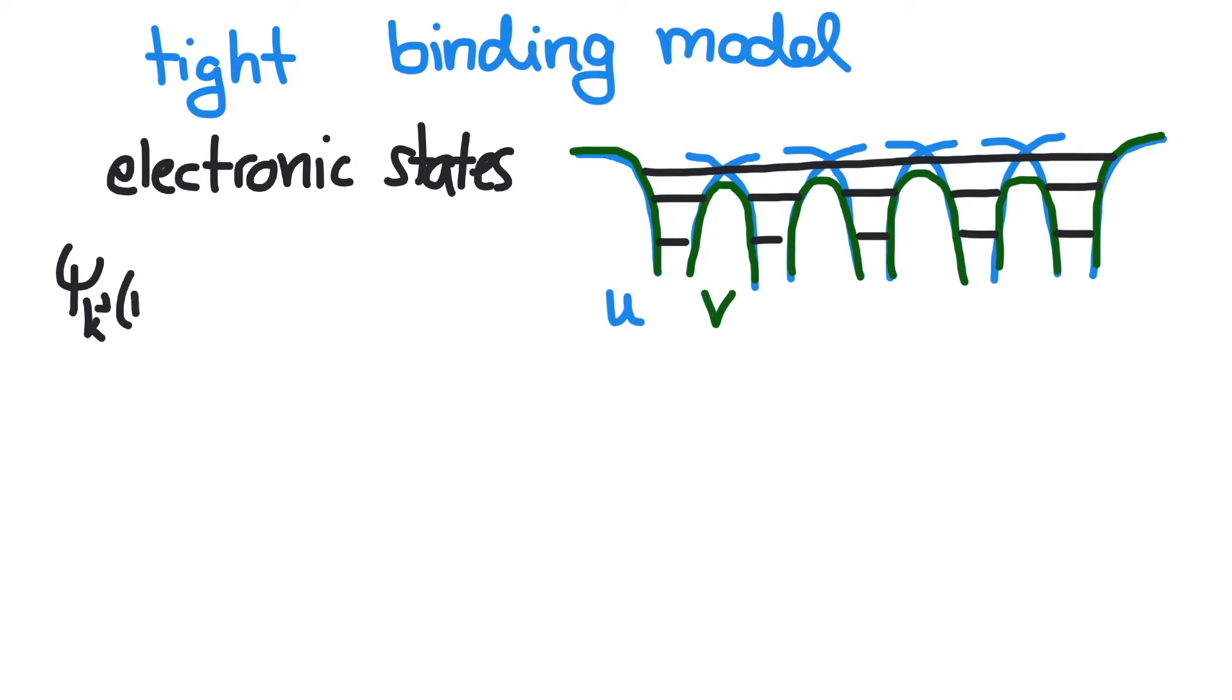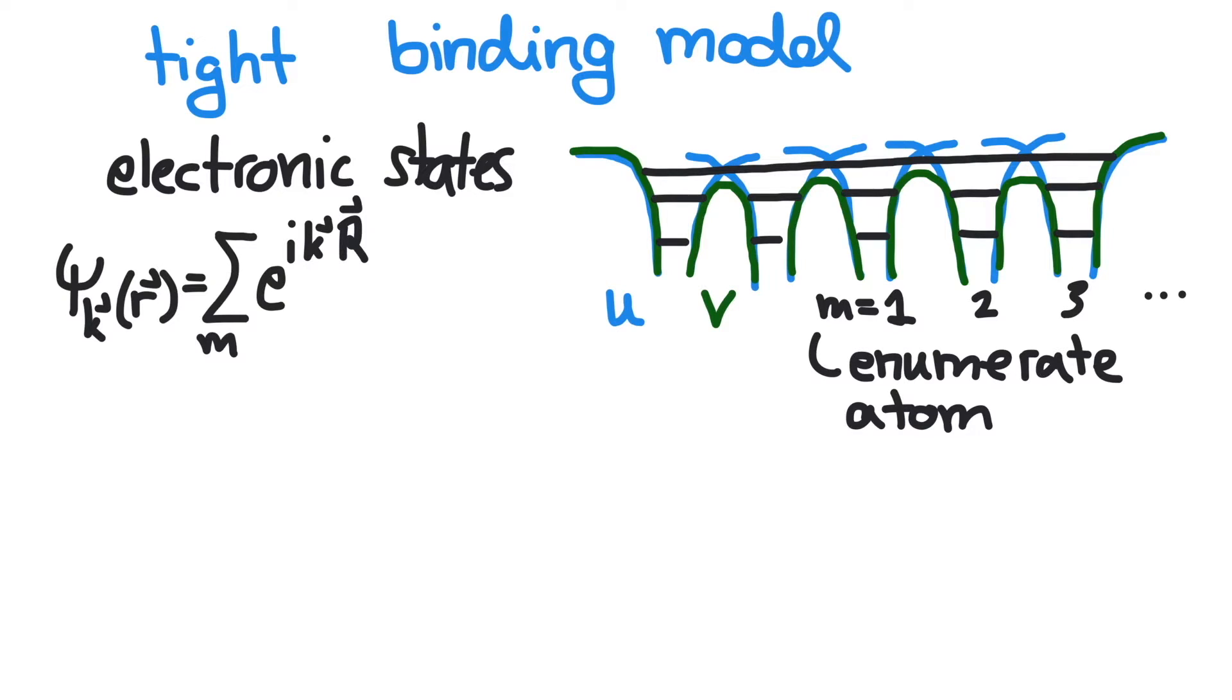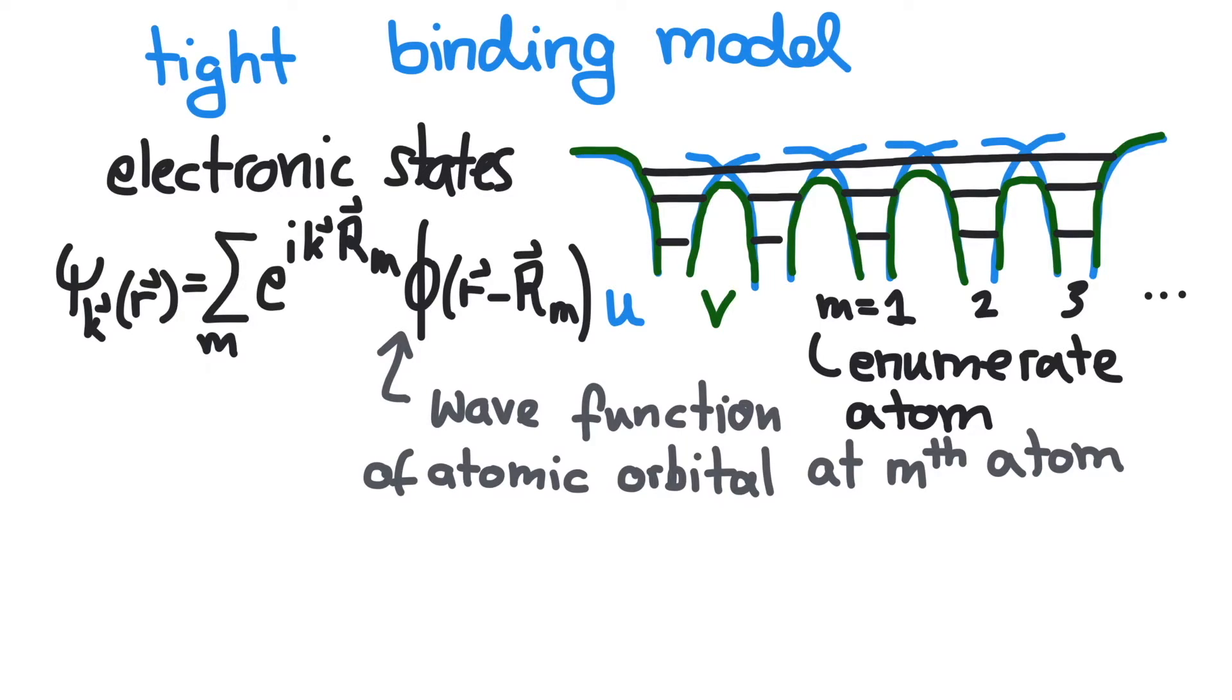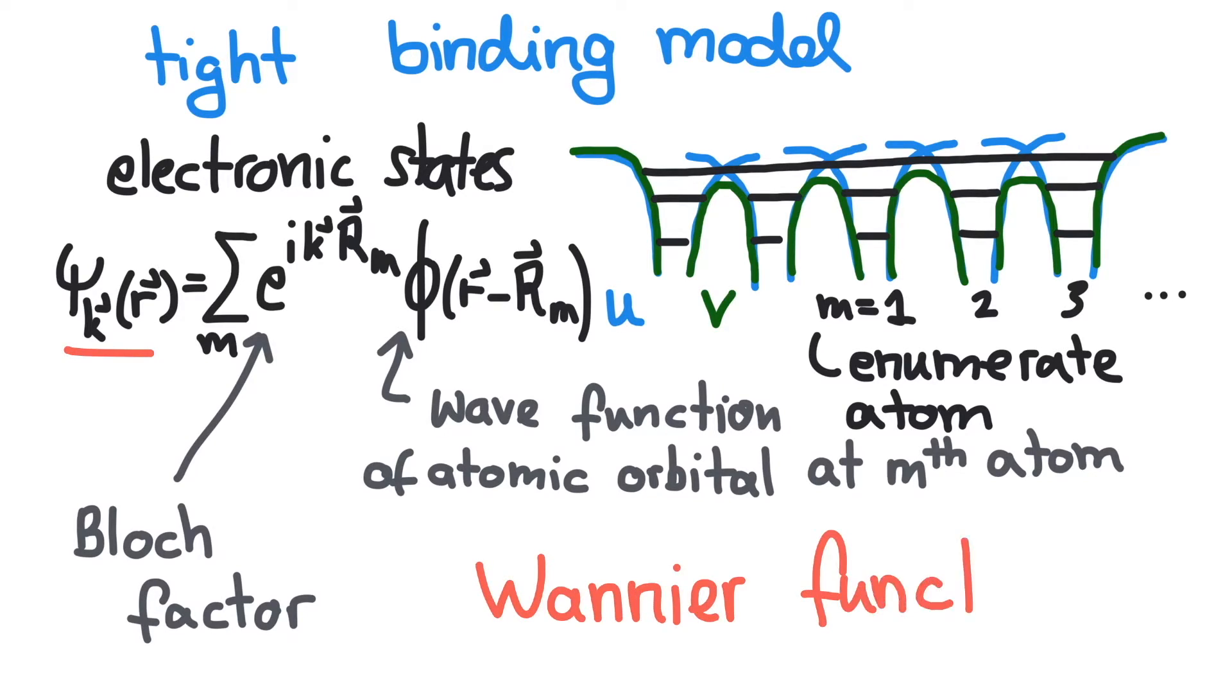We now assume that the electronic states can be approximately described by quasi-atomic wave functions. The wave function consists of both the wave function for a single atom and the Bloch factor. The Bloch factor is the eigenfunction of the translation operator in a periodic potential corresponding to plane waves. A wave function of this form and combination is also called Wannier function.